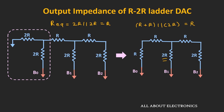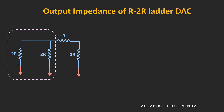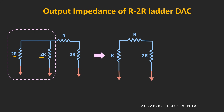Looking at the next equivalent circuit, these two resistors are again connected in parallel, giving an equivalent resistance of R. Then these two resistors are in series, and that combination is once again in parallel with the 2R resistor. So the overall output impedance equals R plus R in parallel with 2R, which is equal to R. Therefore, regardless of the number of bits, the output impedance of this ladder network remains R.